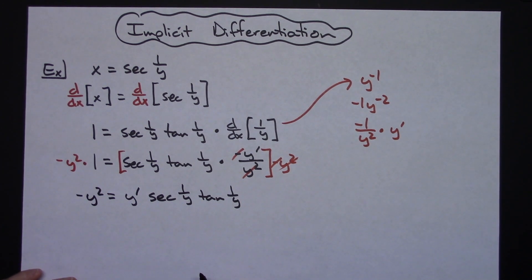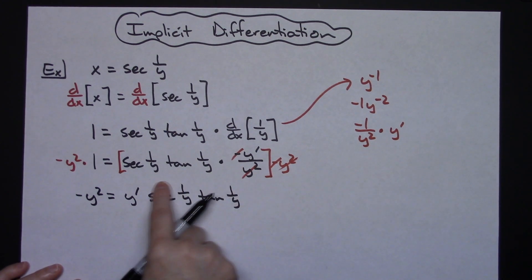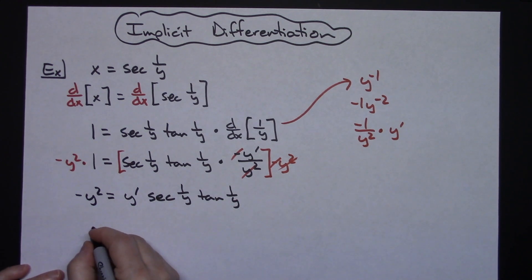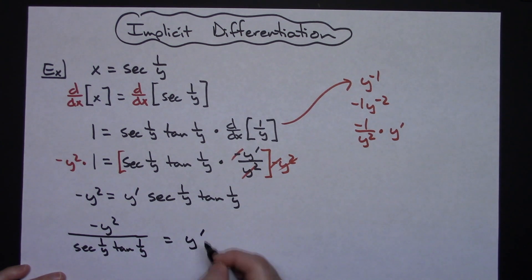Now to go ahead and solve for the y prime basically just divide both sides of the equation by this. So we'll have a negative y squared over a secant 1 over y tangent 1 over y and then that is equal to our y prime.